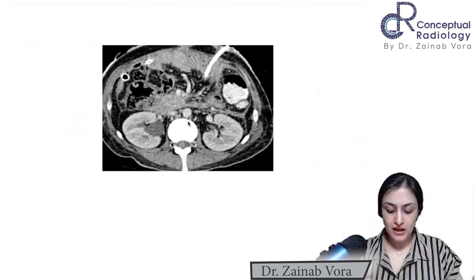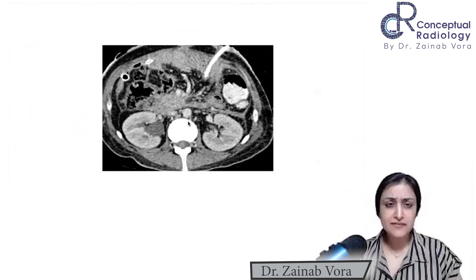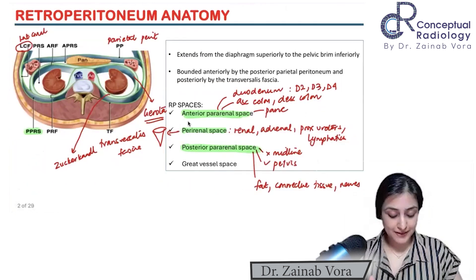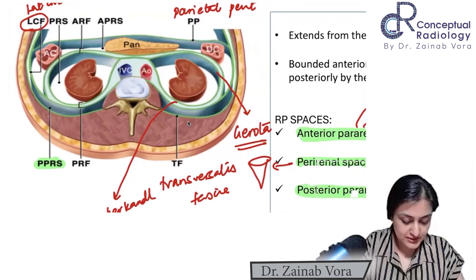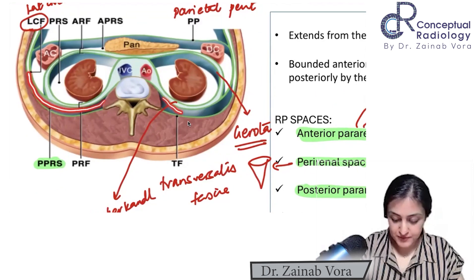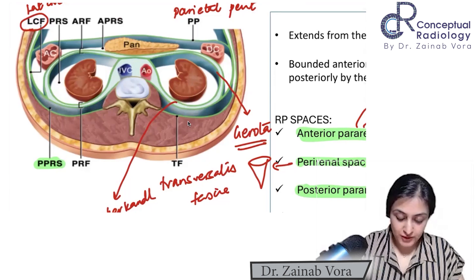Now, how do we look at these spaces on a CT? Normally you will not see the fascia, but you can see it when it's thickened. I'll show you — here is the posterior pararenal space. Can you see this? This is the posterior pararenal space.